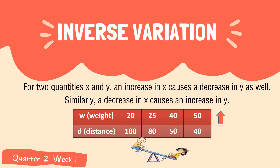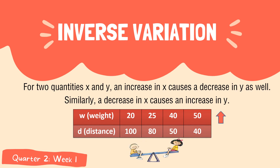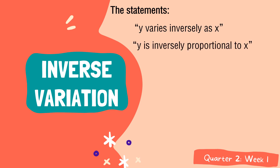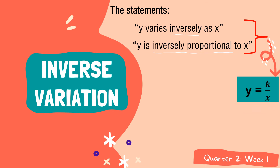In this type of variation, as one variable increases, the other variable decreases. Or as one variable decreases, the other variable increases. That is the concept of inverse variation. The statements to remember are: y varies inversely as x, and y is inversely proportional to x. If you encounter these terms, they are dealing with inverse variation. Writing these statements into an equation gives y is equal to k over x, where k is the constant of variation.